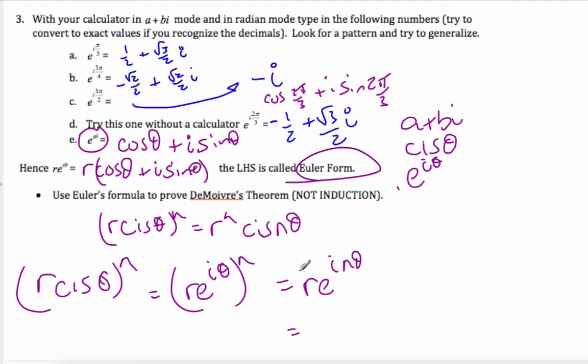Now, if we go back to polar form, that's r cis nθ. And so that's a proof of DeMoivre's theorem by using the rules of exponents.